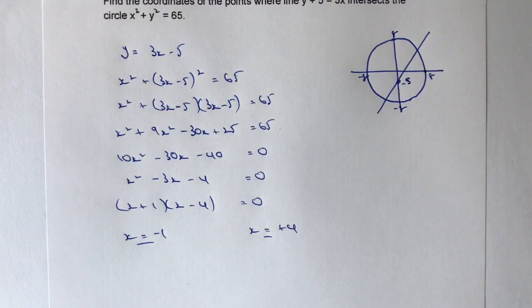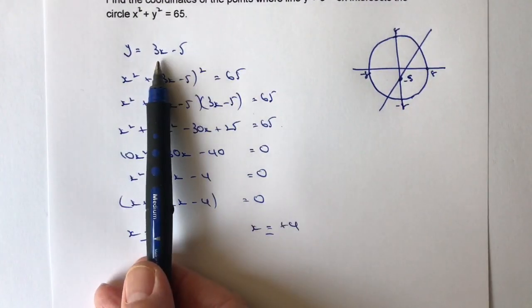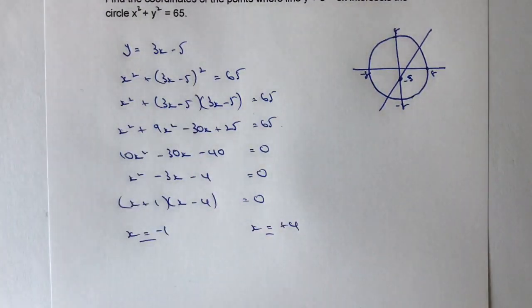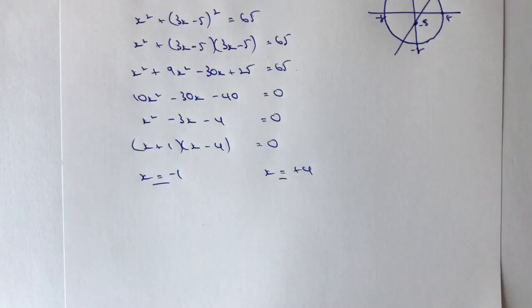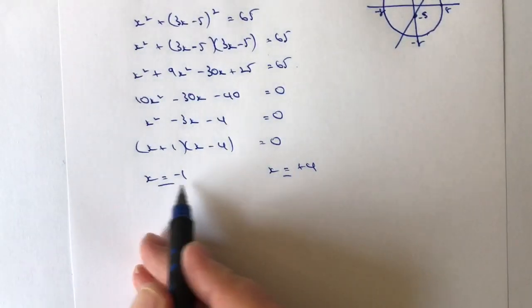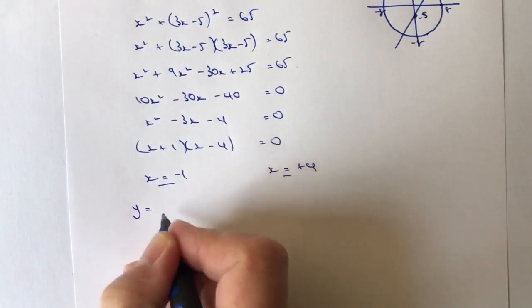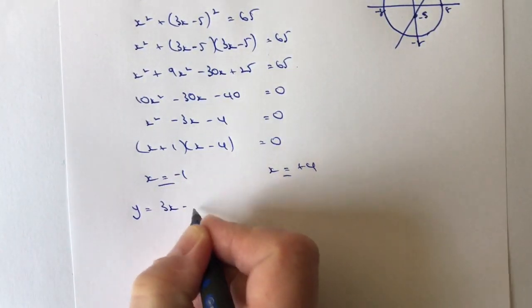So let's now take the x values and plug them straight back into this equation at the top here to calculate our y values. So what we've got then is the ability to take x equals minus 1 and we're going to plug it into y equals 3x minus 5.